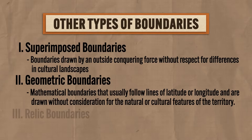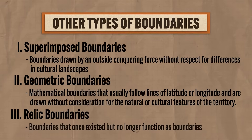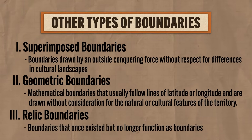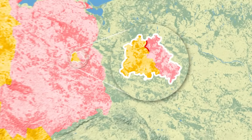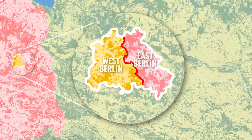Finally, we have relic boundaries, which are boundaries that once existed but no longer function as boundaries. But even though they no longer exist, the effect of that border still remains. The classic example is the Berlin Wall, which divided Germany after World War II.